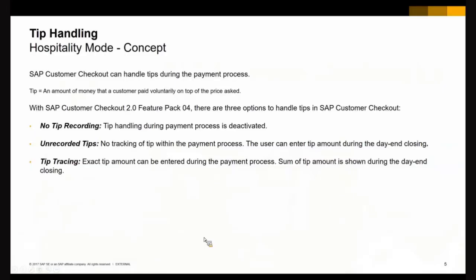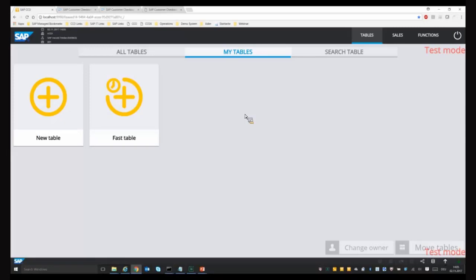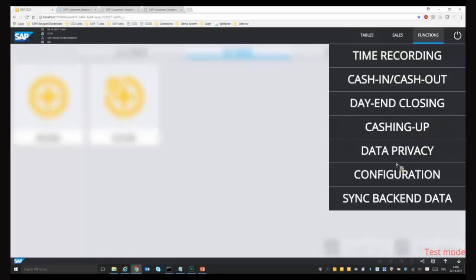Let's come to the first part: TIP Handling. As most of you should know, with Feature Pack 3 we offered functionality to support restaurants. With Feature Pack 3, we already offered functionality to support unrecorded TIPs - it was possible to enter a TIP amount during the day-end closing process, but not yet possible to enter the TIP amount during the payment process. With Feature Pack 4, we are now also able to offer that.